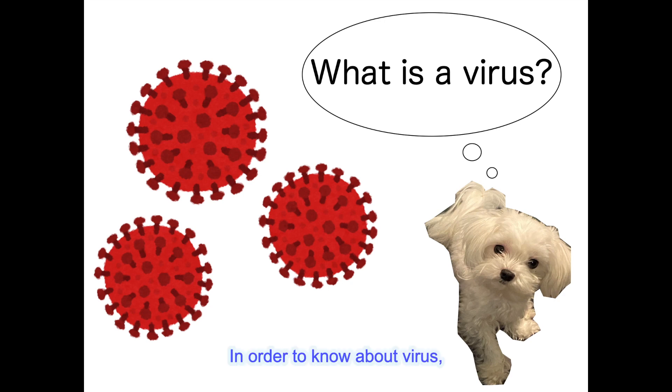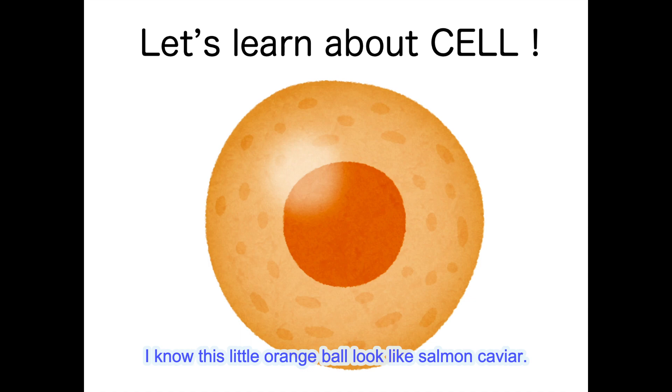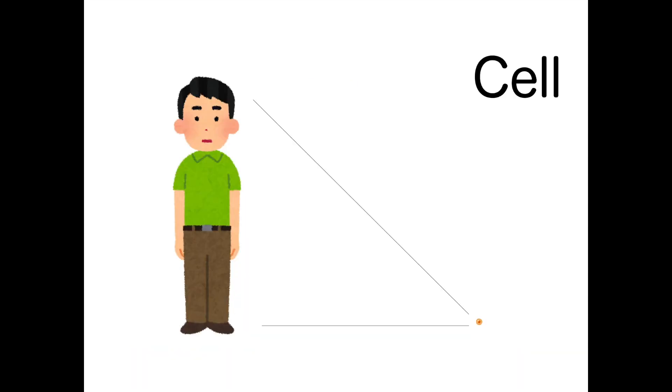In order to know about virus, first of all, we should understand this guy a little bit. Our cell. I know this little orange ball looks like salmon caviar, but just imagine, cell is a very tiny little ball that is alive in our body. In the body of our living creatures, we are made up by many different kinds of these tiny little cells.